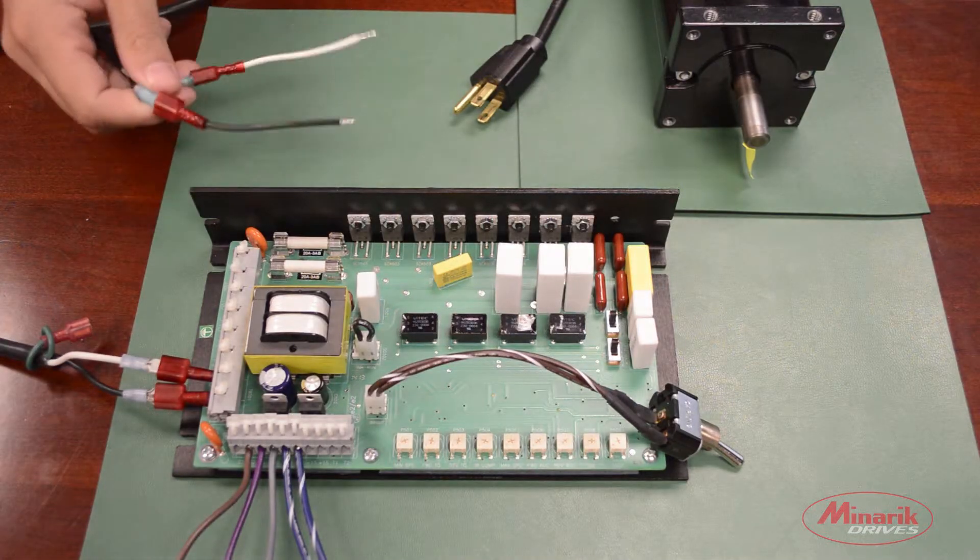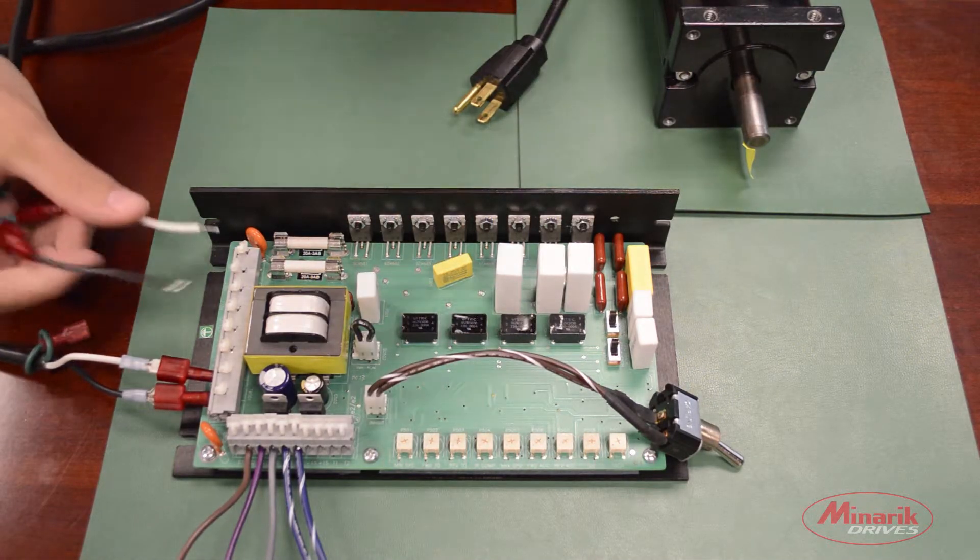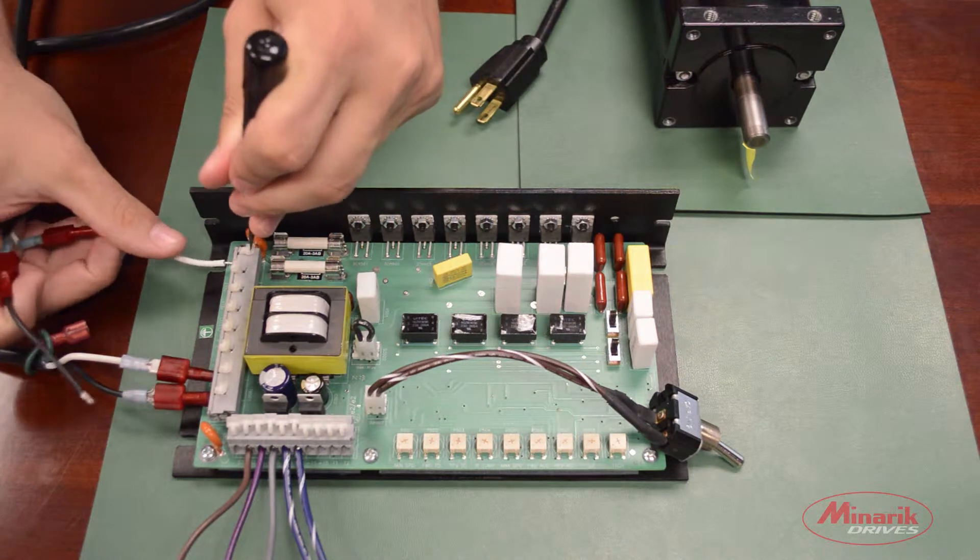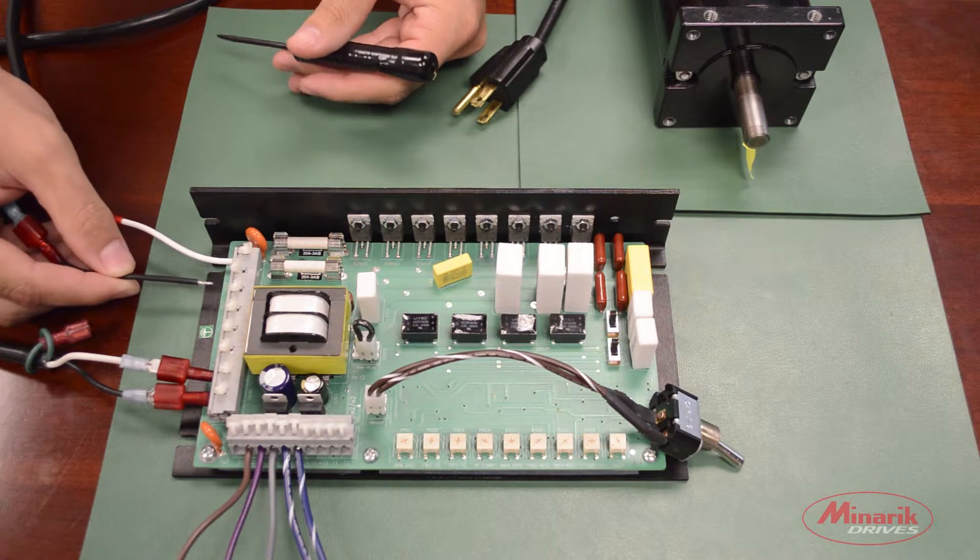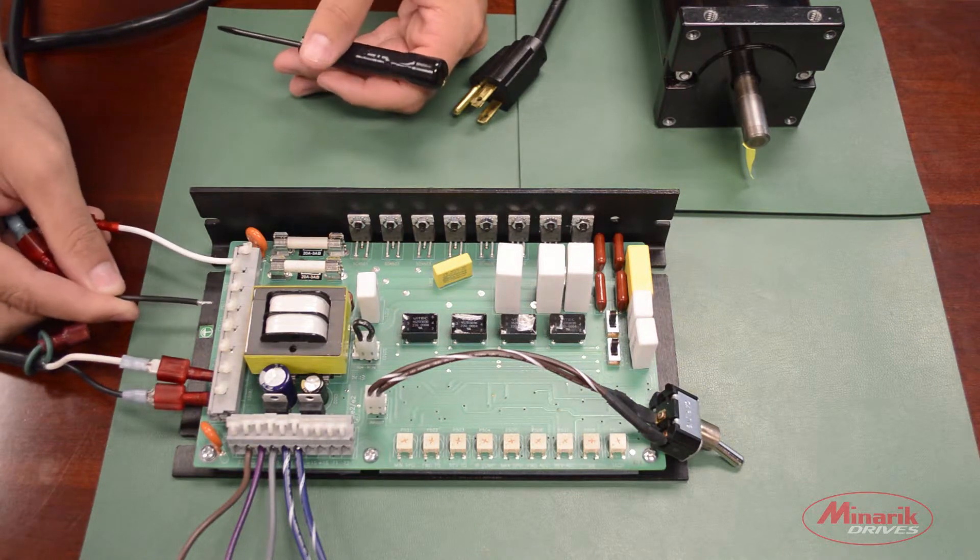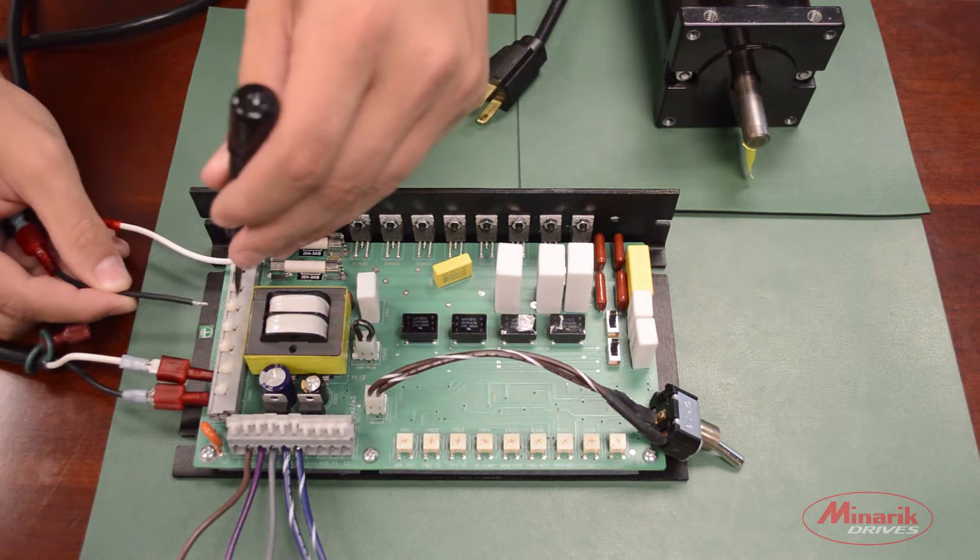Next we're going to connect the power leads to L1 and L2. L1 and L2 have a dedicated spot for 230 volts AC and one for 115 volts AC. We're using 115.